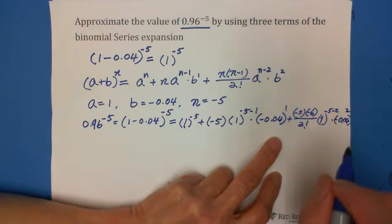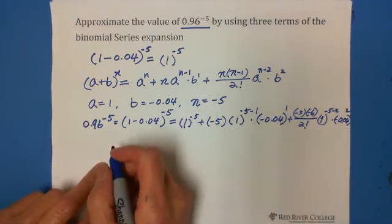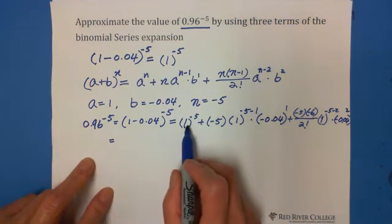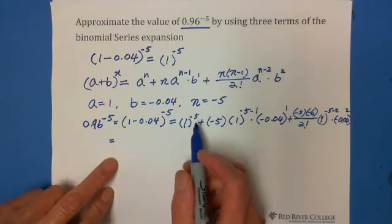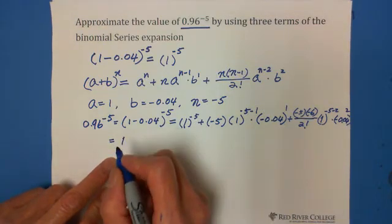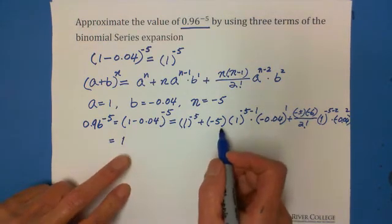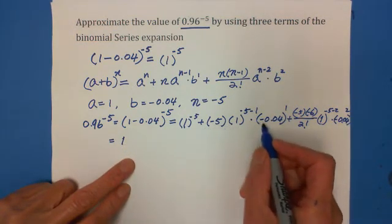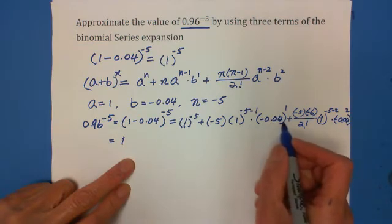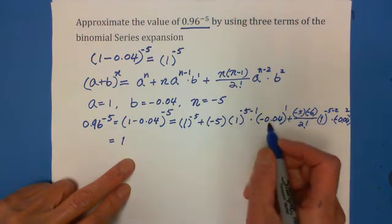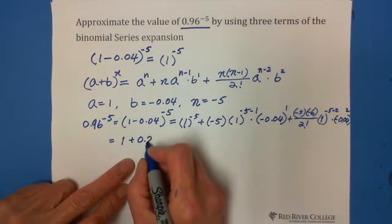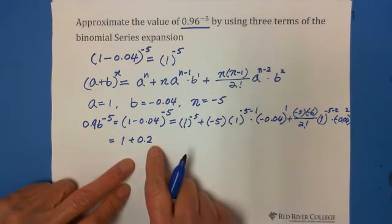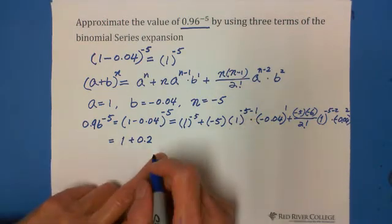Can you see it? Okay. So then we calculate this one. So it equals, the first one is 1 to the negative 5, still 1. And this is plus negative 5 multiply negative 0.04, which is 0.2, plus 1 to the negative 7 still 1.